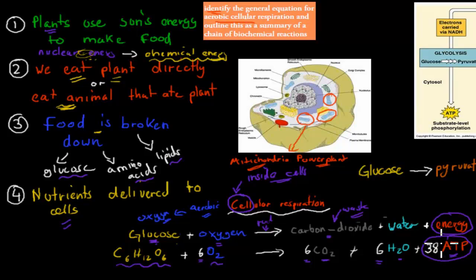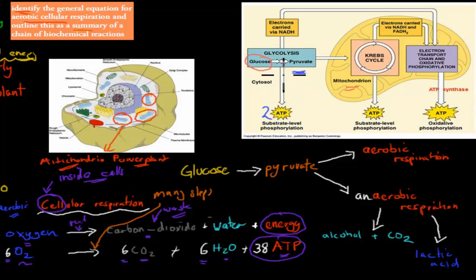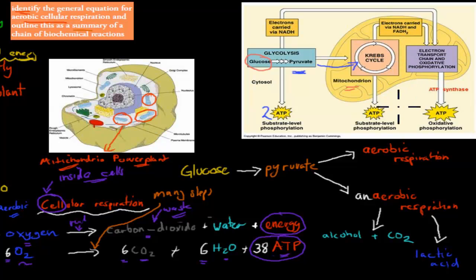Although the equation looks like one reaction, the dot point says to outline it as a summary of many chemical reactions. Glucose is first broken down into pyruvate — this happens outside the mitochondria and releases a net gain of 2 ATP. The pyruvate then enters the mitochondria, where the Krebs cycle, electron transport chain, and oxidative phosphorylation produce a total of 36 ATP. Oxygen is required for these steps inside the mitochondria.